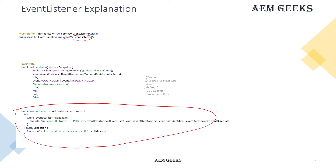To do that, first you need to get a session. You get the session using SlingRepository with a method called loginService. I'm using my own service user which I use across all tutorials. The second parameter is the workspace — if you want the default workspace, pass null; otherwise specify a workspace name. We generally use the default workspace.